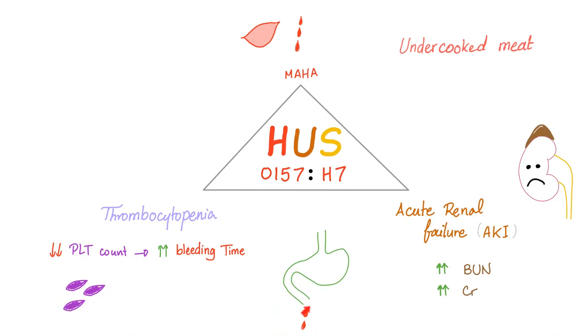Bloody diarrhea can happen with hemolytic uremic syndrome. We also have microangiopathic hemolytic anemia, thrombocytopenia, and acute renal failure.